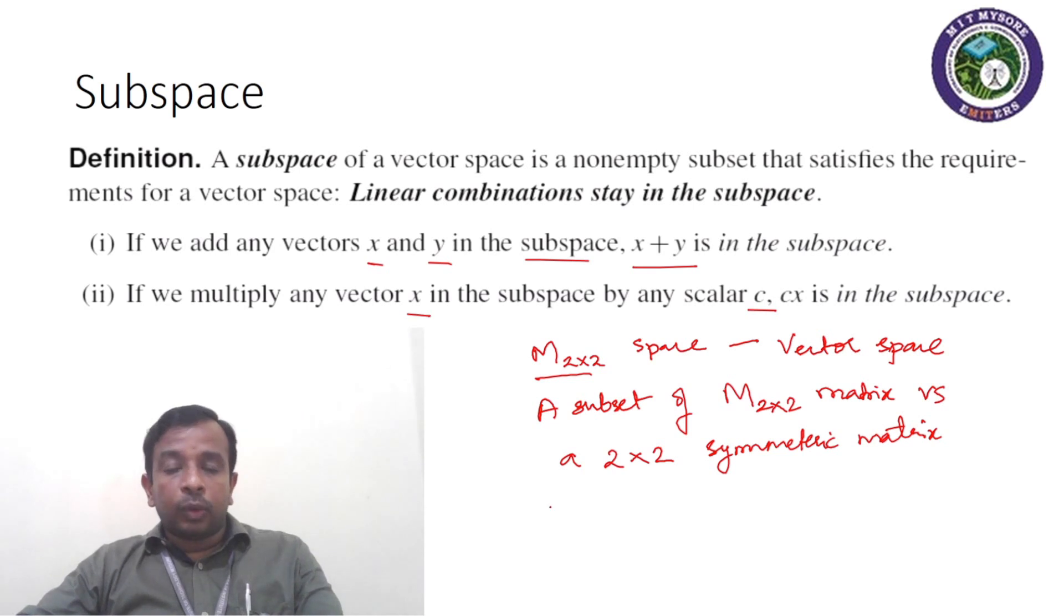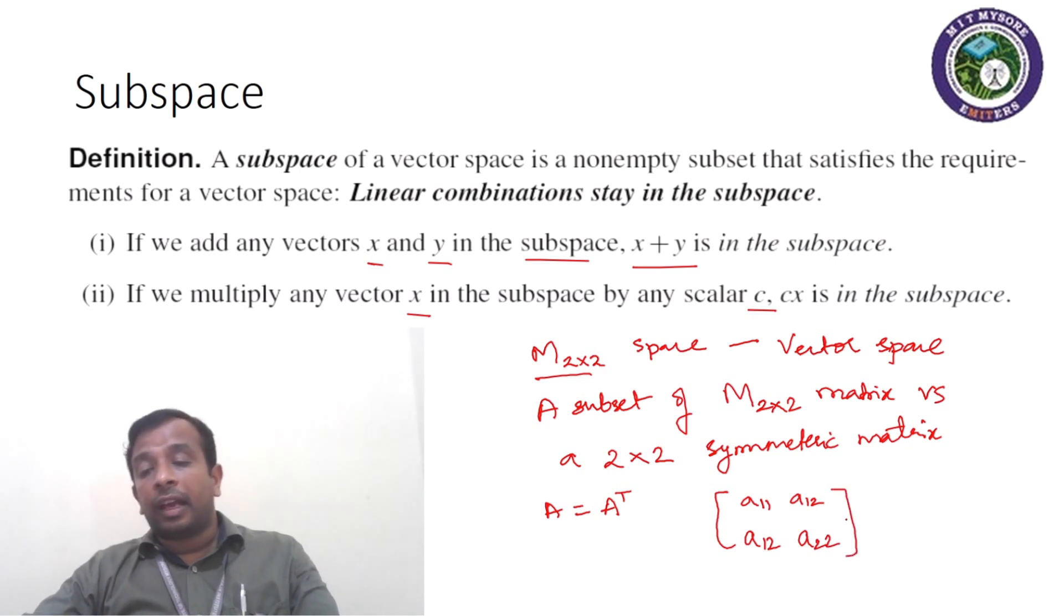And for symmetric matrix, we know that A is equal to A transpose. That is, A11, A12, and instead of A21, it would be A12 again. That is, A12 and A21 would be the same values or same elements, and A22 would remain as it is.